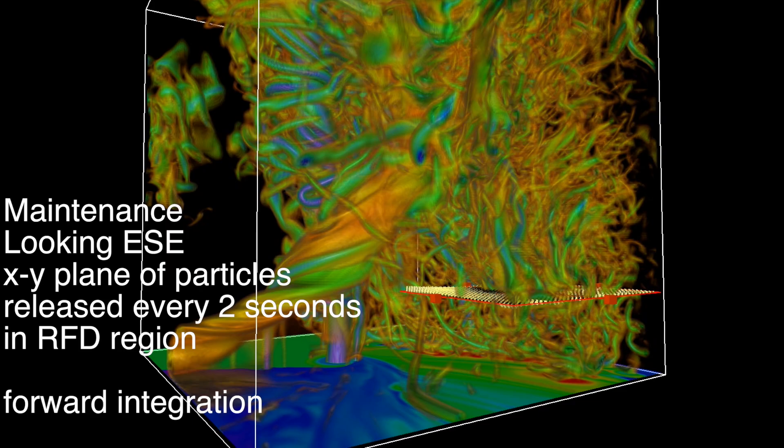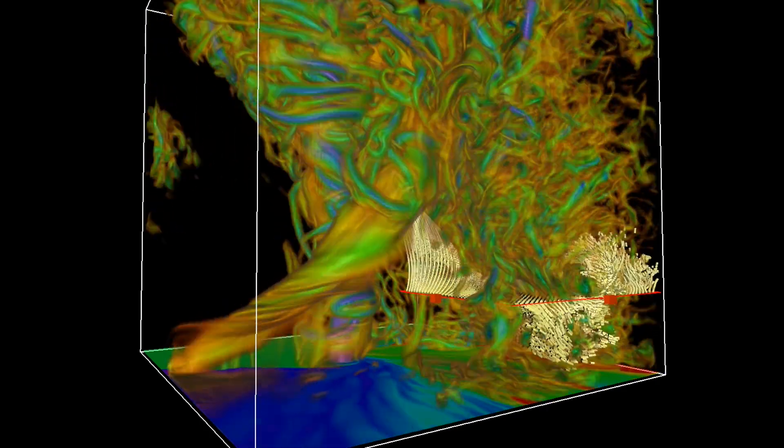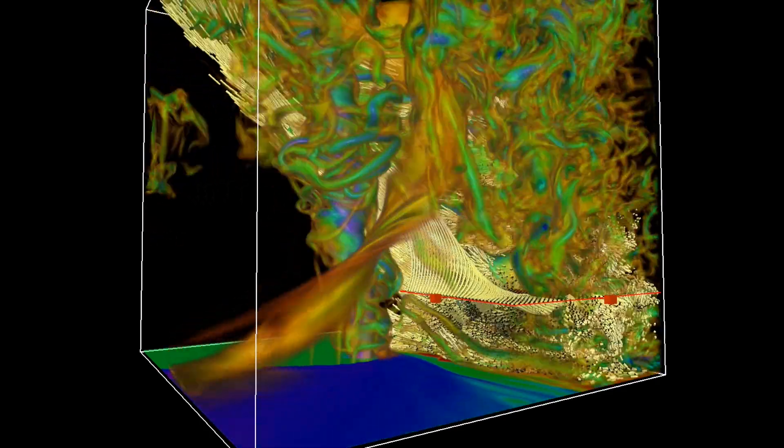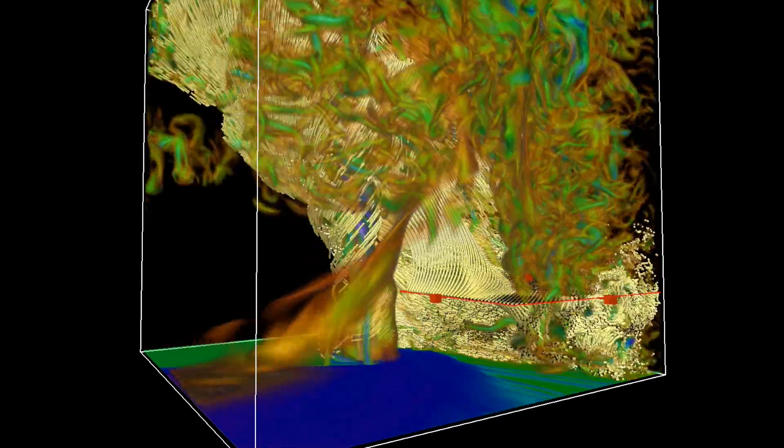Here we release particles in the storm's rear flank downdraft region. These particles follow a turbulent path, where most eventually find their way into the storm's updraft and the outer periphery of the tornado.